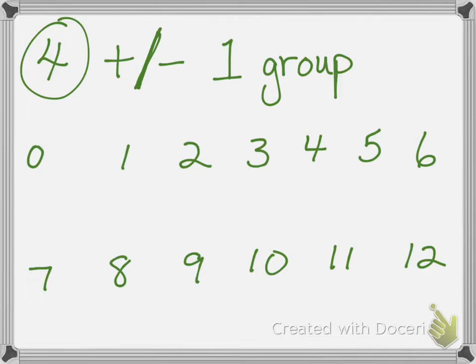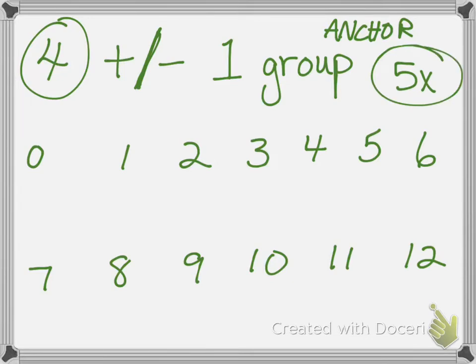Put down your pencil for a minute and let's just think about this. When we were in class, I talked to you about having anchor numbers when you're memorizing your times tables. So let's say that we were going to do five times. An anchor times table that pretty much everybody knows is five times five equals 25. That's one of the very first ones that you learn — it sticks in your head. Five times five is 25, it's so easy to remember.